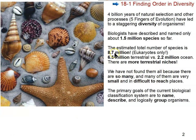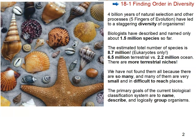The goal is to find and classify all 8.7 million species. The primary goal of biological classification is to find them, name them, and describe them so that when others encounter them, they know a species has already been discovered — and to group them in a logical way for easy communication and study. This is a huge undertaking, and not enough people are going into taxonomy, so it's a wide-open field.